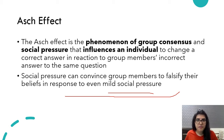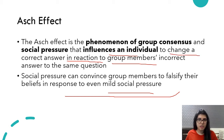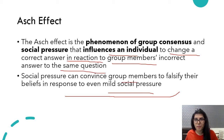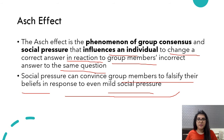This is the Asch effect. The Asch effect is the phenomenon of group consensus and social pressure that influences an individual to change the correct answer in reaction to group members giving the incorrect answer to the same question. Social pressure can convince group members to falsify their beliefs. You falsified your own beliefs due to social pressure — that is the Asch effect.